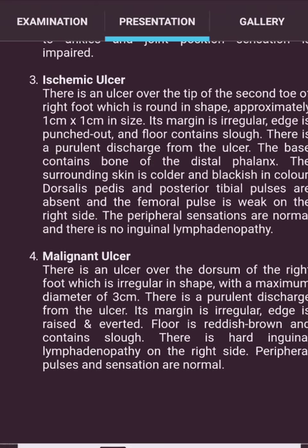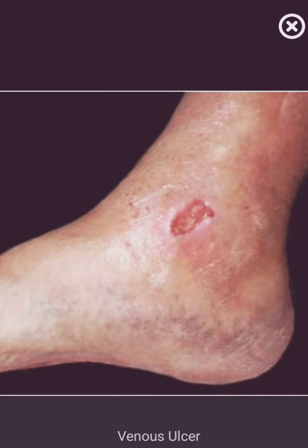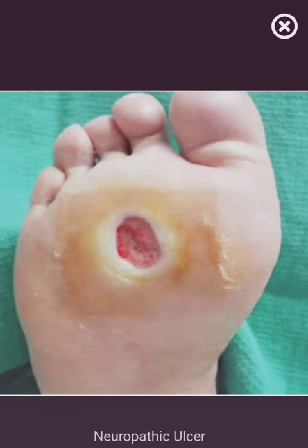Malignant ulcer presentation: 'There is an ulcer over the sole of the right foot, irregular, with a maximum diameter of 3 cm. There is purulent discharge. The margin is irregular with a raised and everted edge. The floor is friable and contains slough. There is hard inguinal lymphadenopathy on the right side. Peripheral pulses and sensation are normal.'